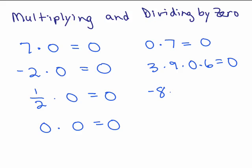Or you might have negative 8 times 0 times negative 9, the answer is 0. Any time you have 0 anywhere in multiplication, the answer is 0.